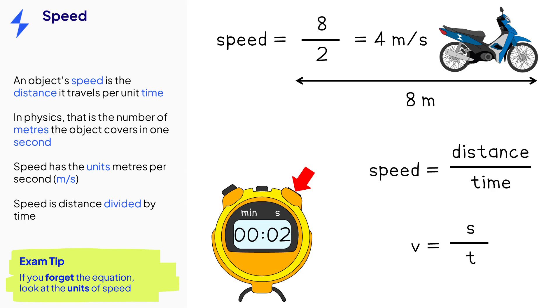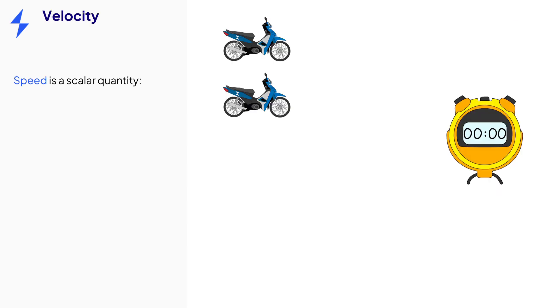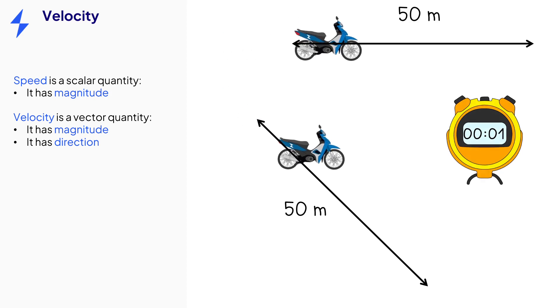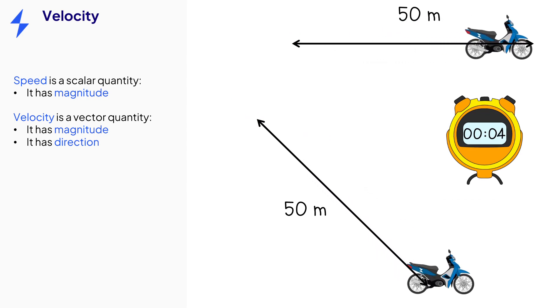While speed is a scalar with only magnitude, velocity is similar but it has magnitude and direction, it is a vector. Velocity is distance covered per unit time in a particular direction. Let's consider these two bikes. Both travel 50 meters in four seconds. So, they have the same speed.